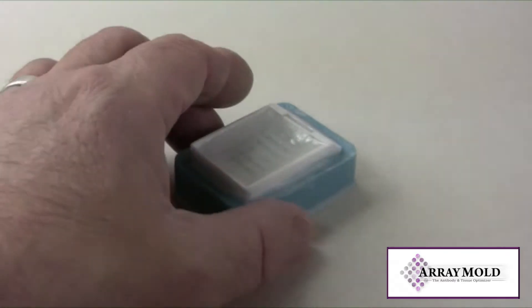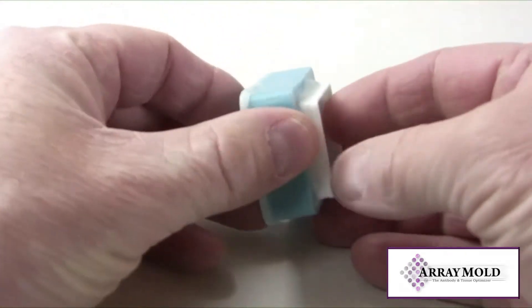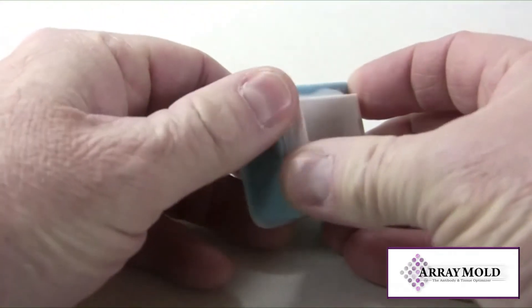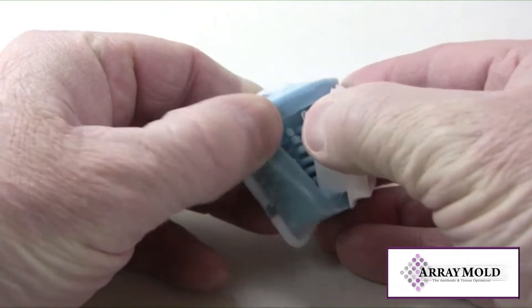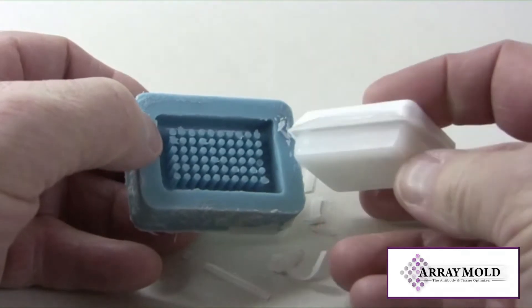Before I pull the array mold and paraffin block apart, I like to wait until they are both at about room temperature. Reason being is that the array mold will be softer and more flexible and the cores will last longer if you do this.